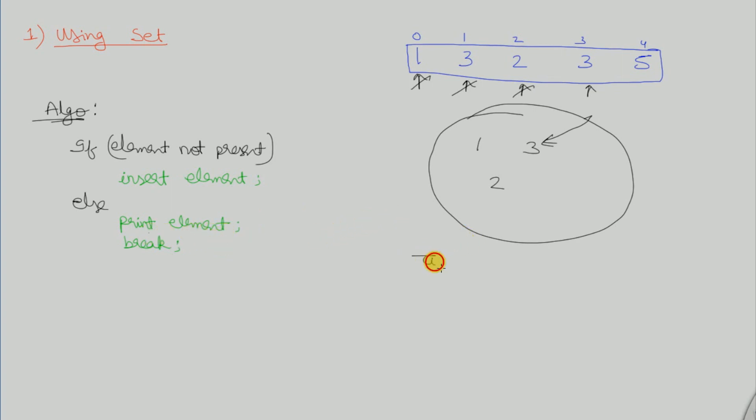This process takes time of order of n because in the worst case we have to scan through all the elements. The space complexity is order of n because we're using a set which stores the elements, and in the worst case we need to store all elements since there may be no duplicate.